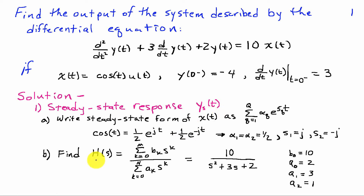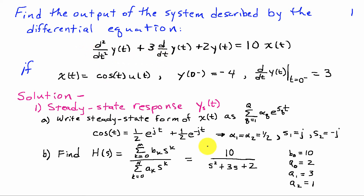To find y_s, we need the transfer function H(s), which is the ratio of the polynomials in s involving the coefficients of the differential equation. Using b₀ = 10, a₀ = 2, a₁ = 3, and a₂ = 1, we can write H(s) = 10 / (s² + 3s + 2).